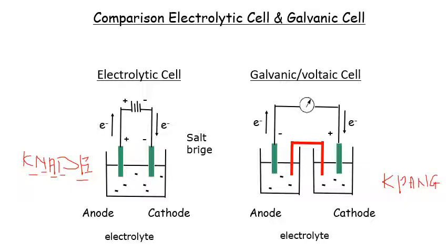Another important difference: the galvanic cell has a salt bridge and a voltmeter, while the electrolytic cell has no salt bridge and must be connected to a battery. The anode and cathode terminals are different between the two cell types.